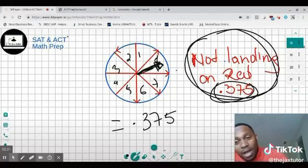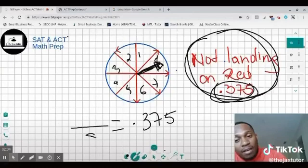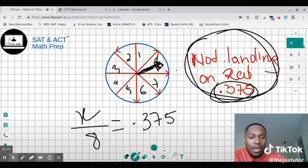So how many total do we have? 8. How many of them are not red? That's what we're looking for, that's what we don't know. And how do we find x?